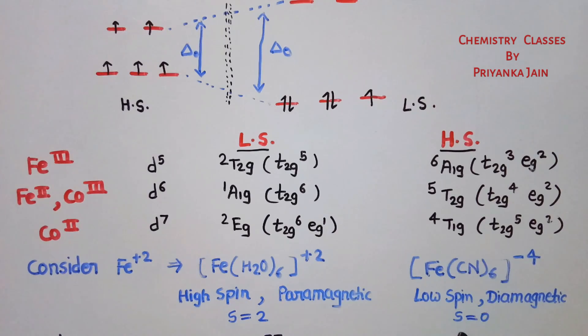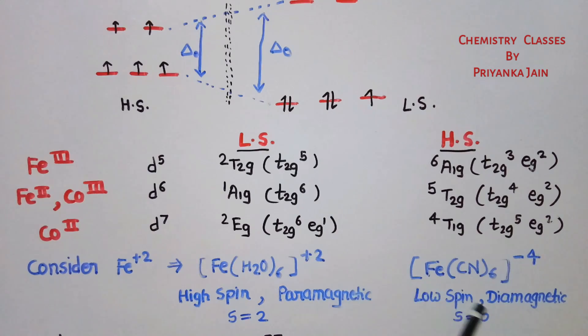So Fe(H₂O)₆²⁺ is paramagnetic with S=2, while Fe(CN)₆⁴⁻ is diamagnetic with S=0.